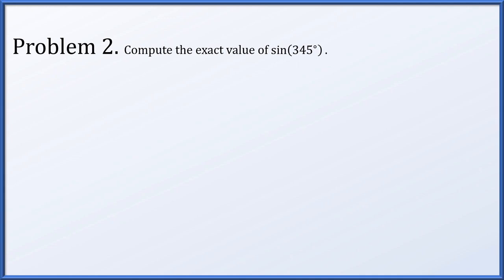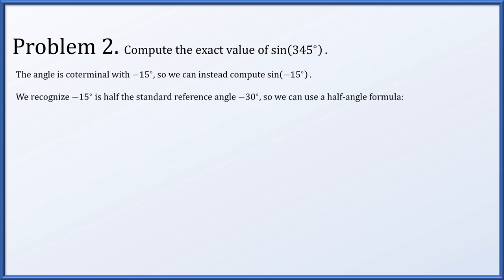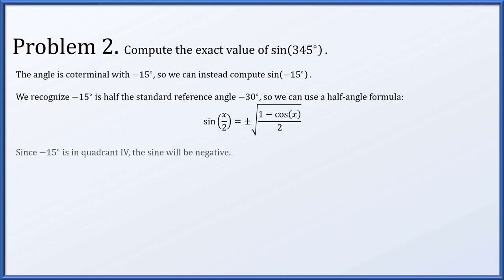In problem 2, let's compute the exact value of the sine of 345 degrees. This angle is coterminal with negative 15 degrees, so instead we'll compute the sine of negative 15 degrees. Negative 15 degrees is half of one of our reference angles, negative 30 degrees, so we'll use a half angle formula. The sine of x over 2 is plus or minus the square root of 1 minus the cosine of x, all over 2.